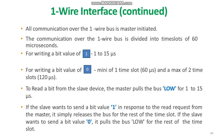All communication is master-initiated. Communication over the OneWire bus is divided into time slots of 60 microseconds. For writing a bit value of 1, 1 to 15 microseconds are required — the bus master pulls the bus low for 1 to 15 microseconds and then releases the bus for the rest of the time slot. For writing a bit value of 0, the master pulls the bus low for a minimum of one time slot (60 microseconds) and a maximum of two time slots (120 microseconds). To read a bit from the slave, the master pulls the bus low for 1 to 15 microseconds. If the slave wants to send bit value 1, it releases the bus for the rest of the time slot; if it wants to send bit value 0, it pulls the bus low for the rest of the time slot.